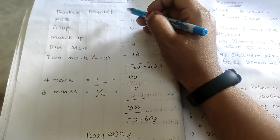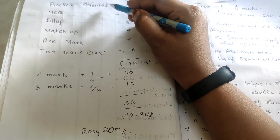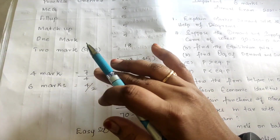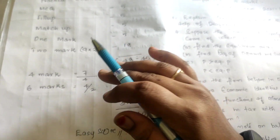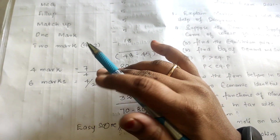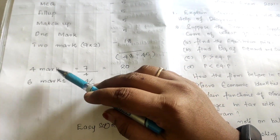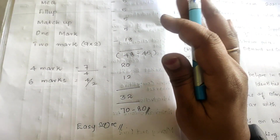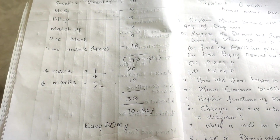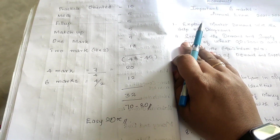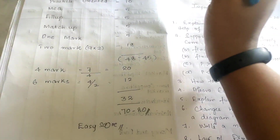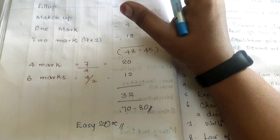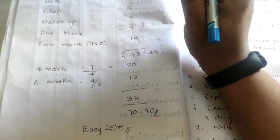By following this pattern — prioritizing practical oriented questions first, then other sections — you can score seventy to eighty marks very easily. If you want to pass with at least sixty percent, write at least two six-mark answers and at least one four-mark answer. You can score very well in economics specially.